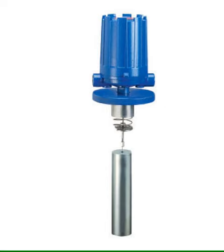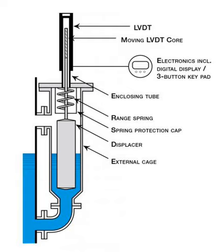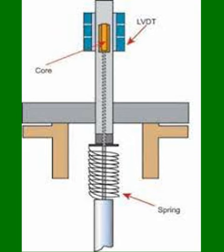A displacer-type level transmitter operates primarily on the principle of buoyancy. Picture a displacer — a buoyant object often cylindrical or ellipsoidal in shape — connected to a spring-loaded mechanism. This displacer is partially immersed in the liquid, the level of which we need to measure. The buoyant force acting on the displacer equals the weight of the liquid displaced by the immersed portion of the displacer. It's a fascinating interplay of forces, where this buoyant force is in direct proportion to the liquid level.